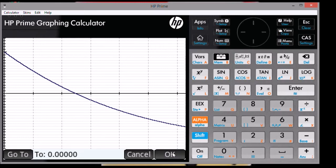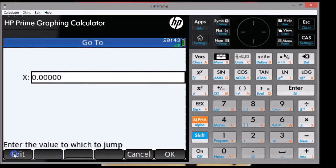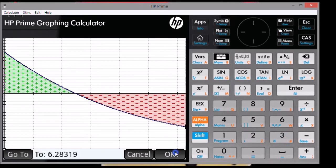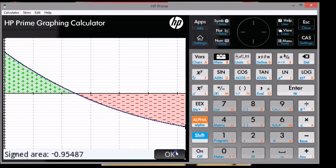Now we're going to hit the go to soft key again. I'm going to go to 2 pi. Press OK. Press OK one more time.